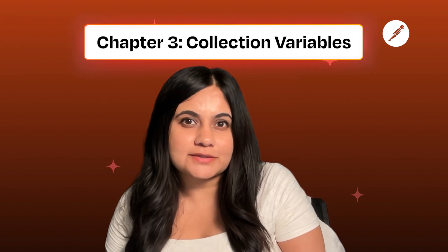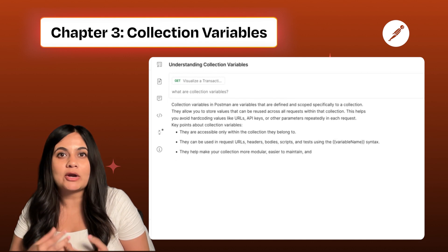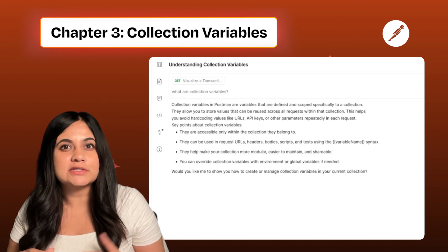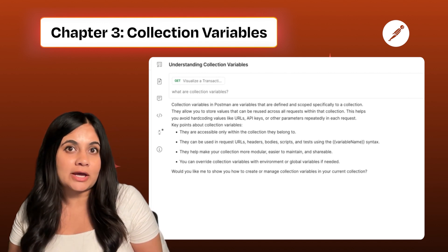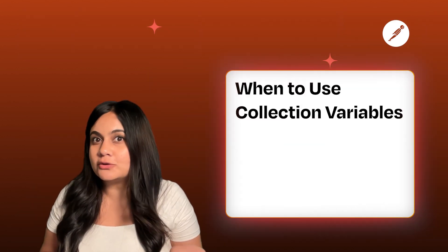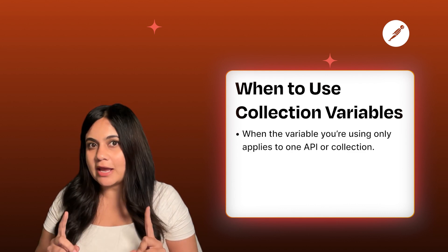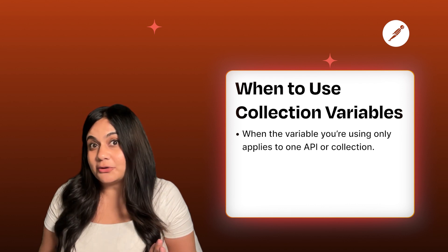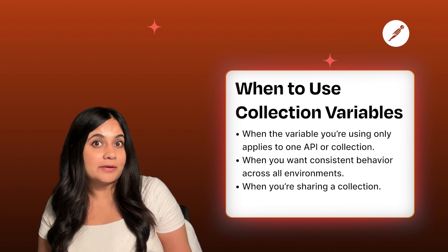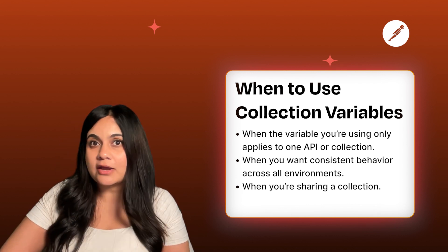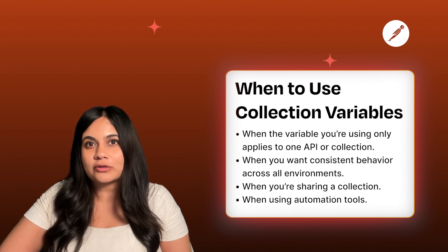Collection variables belong to a specific collection and remain consistent no matter which environment is active. They're ideal for values that don't change too often, like static URLs, versions, or default headers. Use collection variables when the variable only applies to one API or collection, when you want consistent behavior across all your environments, or when sharing your collection through forking, exporting, or using automation tools like the collection runner or the Postman CLI.